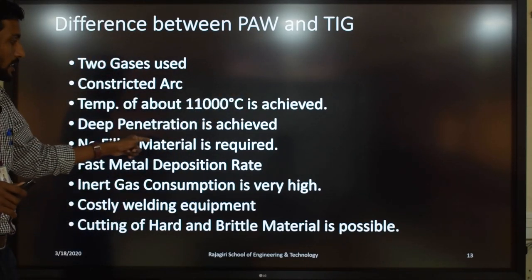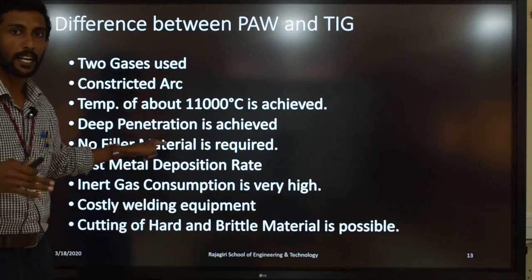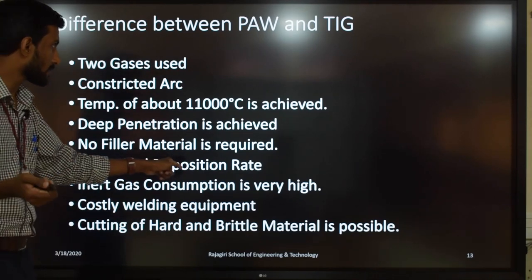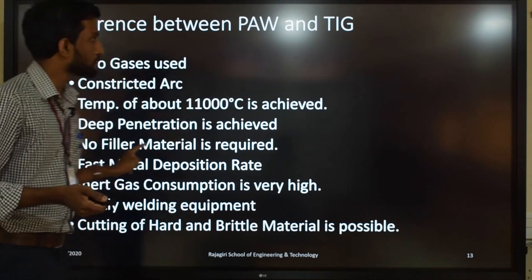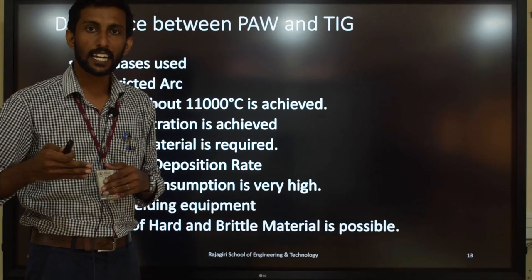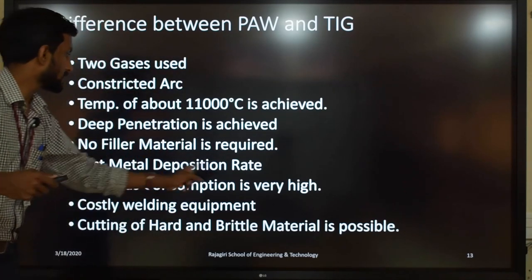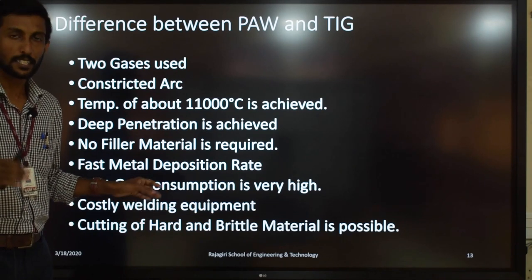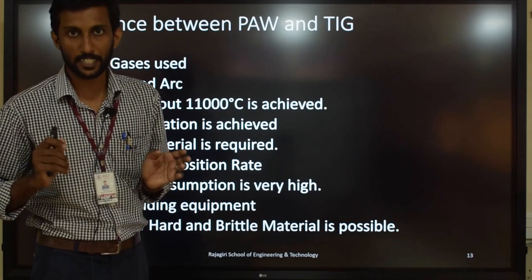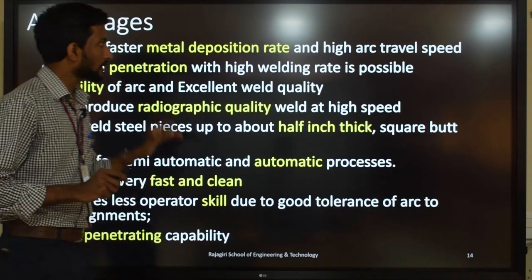In plasma arc welding, no filler material is required because the temperature itself can fuse the metal. In TIG welding, filler material may or may not be used. Metal deposition rate is faster in plasma arc welding compared to TIG welding. Inert gas consumption is very high in plasma arc welding because the high temperature requires more shielding gas continuously.